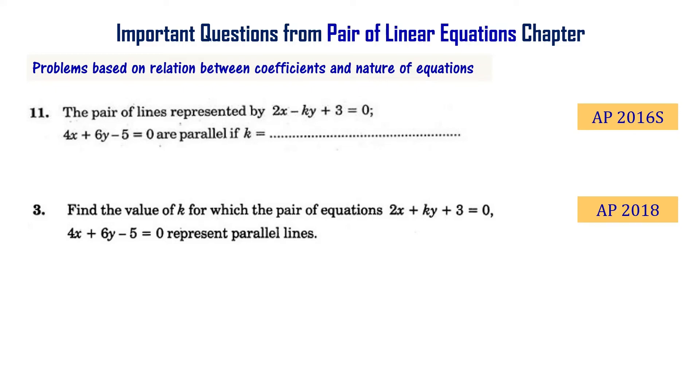The pair of lines represented by 2x minus ky plus 3 equal to 0 and 4x plus 6y minus 5 equal to 0 are parallel. Then what is the value of k? This question appeared in the AP final supplementary exam 2016. Same question appeared in AP final exam 2018.